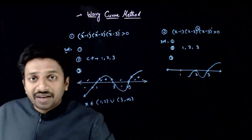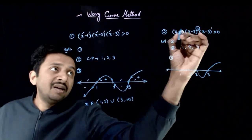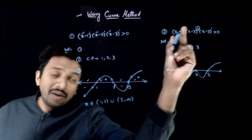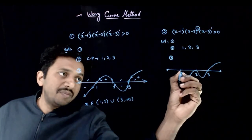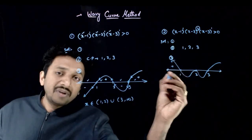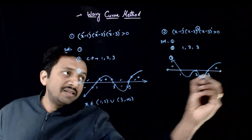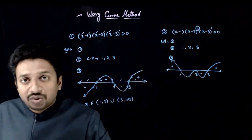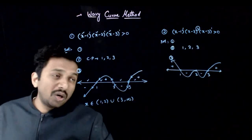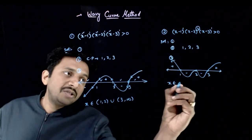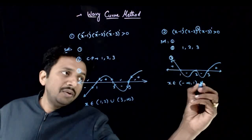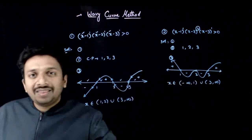What is happening at x = 1? The power of x minus 1 is 1, which is odd, so the sign changes — the curve goes from negative side to positive side. The curve is above the x-axis in the interval before 1 and after 3, and negative in the two intervals between them. Since I want this expression to be greater than 0, the solution is x belongs to (−∞, 1) union (3, ∞).